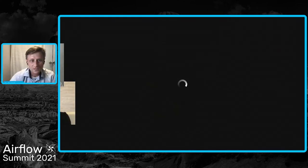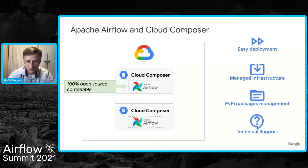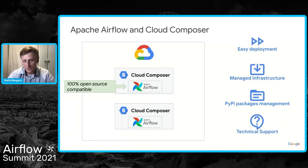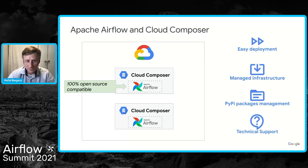Apache Airflow is at the heart of Cloud Composer. We try to run a 100% open-source compatible Airflow version, with only small tweaks to make it runnable on Google Cloud Platform — otherwise it's almost a vanilla version of Apache Airflow. We organize deployment so it's very easy: within one or two clicks you get a fully operational Airflow environment running on managed infrastructure governed by Google. You also get the possibility to install PyPI packages to modify the default Airflow version.